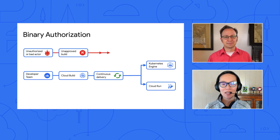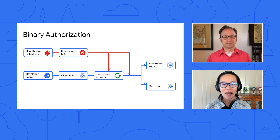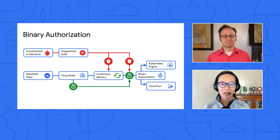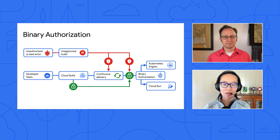Well, Martin, it's a complex problem, and we want to help developers navigate it. One thing you can do today is to use binary authorization to make sure that only approved builds can get deployed to Google Kubernetes Engine or Cloud Run in your project. Great, because I have a Cloud Run service here that I'd like to secure so that no one can bypass my CICD pipeline. Can you walk me through it? Sure.